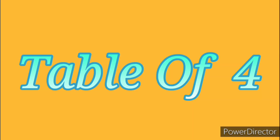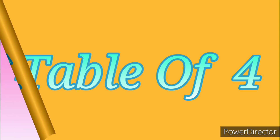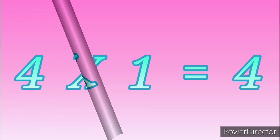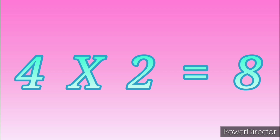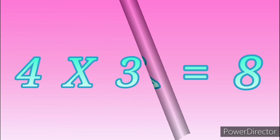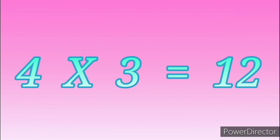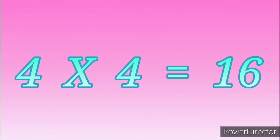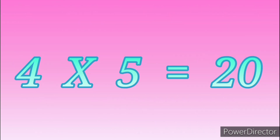Table of Four. 4 ones are 4. 4 twos are 8. 4 threes are 12. 4 fours are 16. 4 fives are 20.